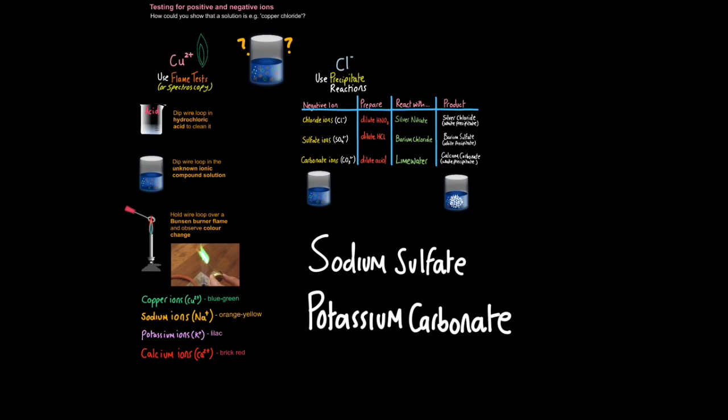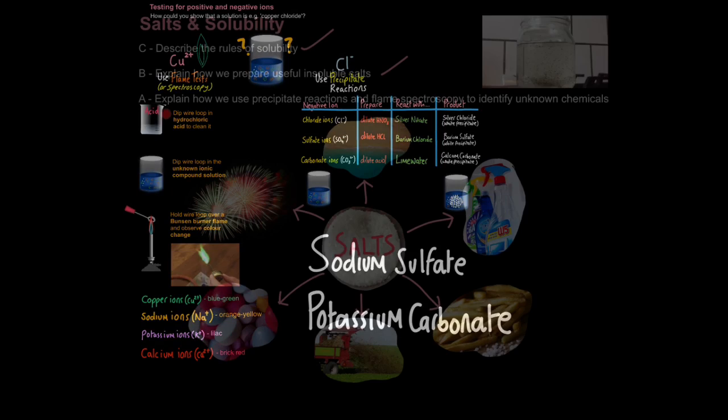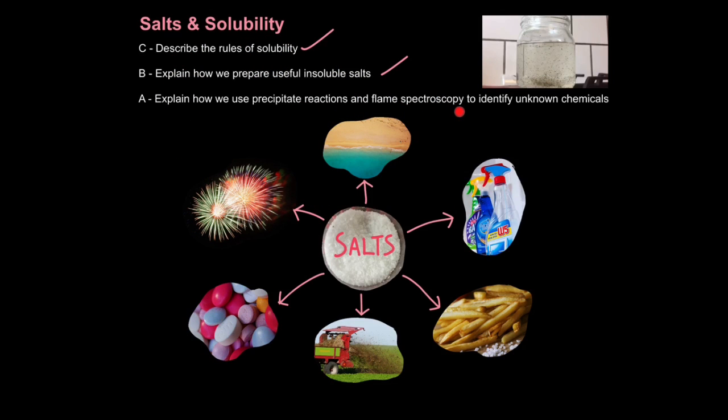So remember, I'll only test you on a compound that you can make from these four metal ions and these three non-metal ions. This is how we explain how we use precipitate reactions and flame spectroscopy to identify unknown chemicals.